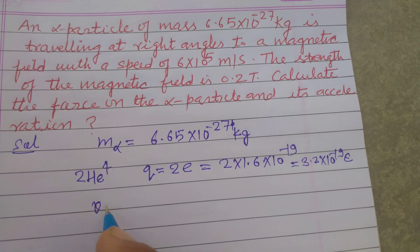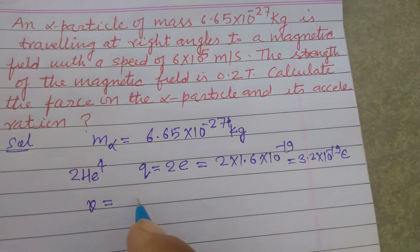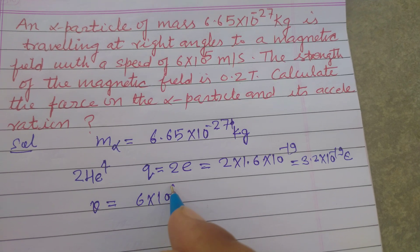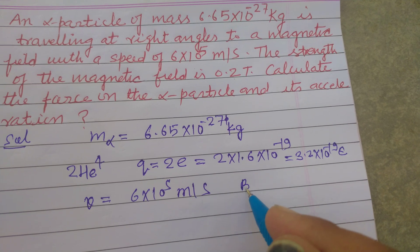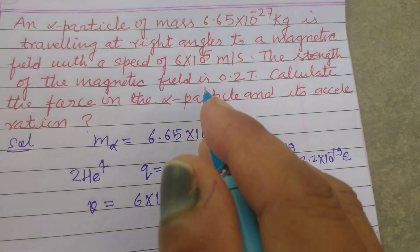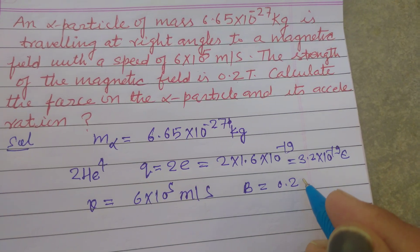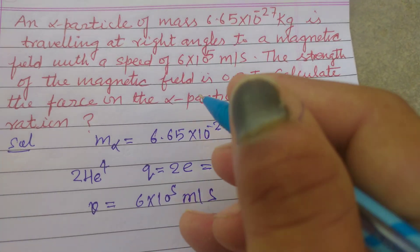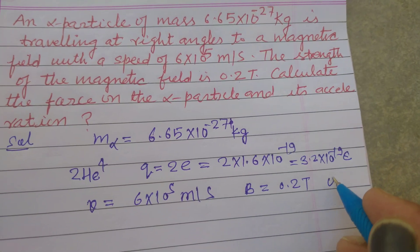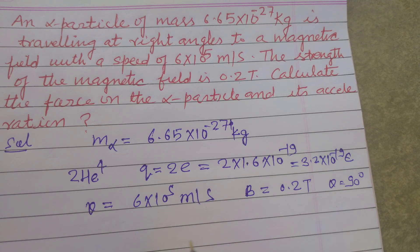The velocity of the alpha particle, or speed, is given as 6 × 10^5 meters per second. The magnetic field is 0.2 Tesla. And the angle at which it enters the magnetic field, θ, is 90 degrees, a right angle.